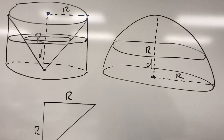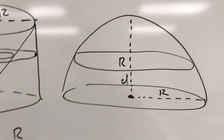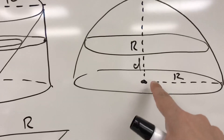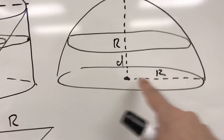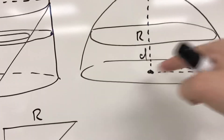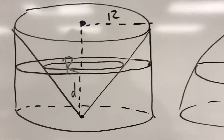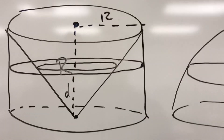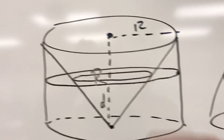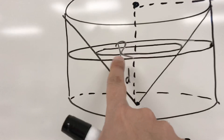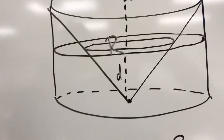So the idea here is that if this sphere has a radius of r, this height here would also be r. We're saying also that this cylinder would have a radius of r and it would also have a height of r, and you can see I've put that in there.